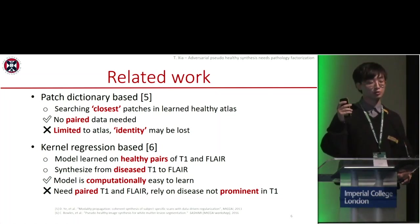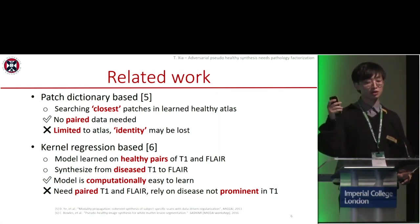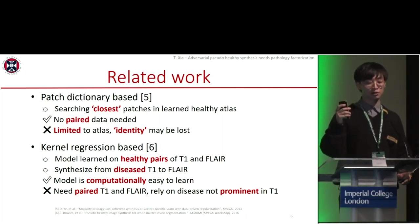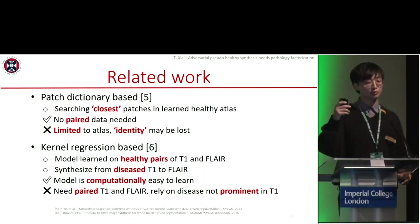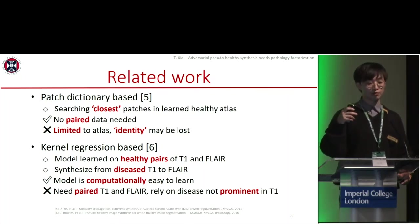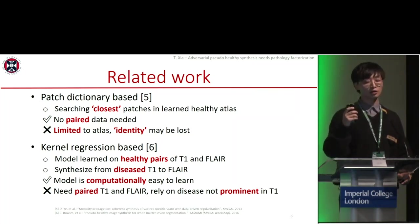Another approach is canonical regression-based methods, where they learn a model on healthy pairs of T1 and FLAIR images, and synthesize the healthy FLAIR modality images from diseased T1 images. This model is easy to train, but it needs paired T1 and FLAIR images, and it relies on the disease not being obvious in the T1 modality.